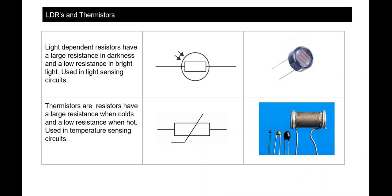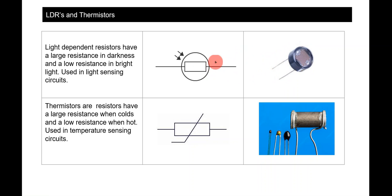Light dependent resistors have large resistance in darkness and low resistance in bright light, and they're used in light-sensing circuits. In the dark they resist the flow of electricity completely, and as light shines on them they reduce their resistance. They help circuits sense the environment and control the flow of electricity based on the amount of light present.